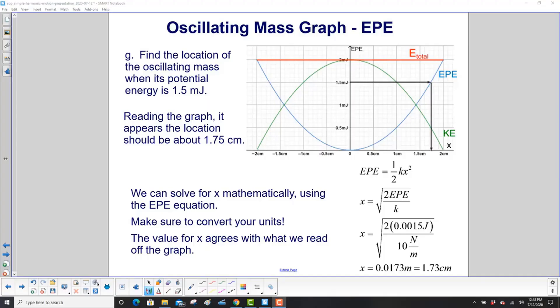Now, we're going to go backwards. We want to find the location of the oscillating mass when its potential energy is 1.5 millijoules. Graphically, here's 1.5. Go over until you hit the EPE curve. Go on down, and it looks like it's about 1.75 centimeters. But we can do it mathematically, because we have the value for K. Here's the EPE. Solve that equation for X. You do that by multiplying both sides by 2 over K.